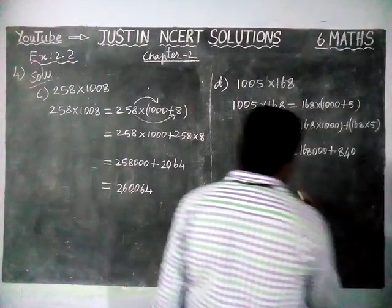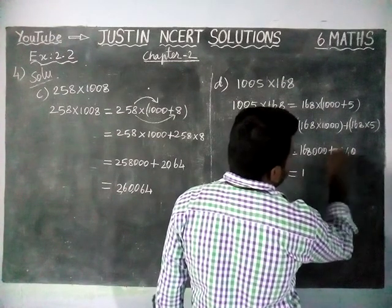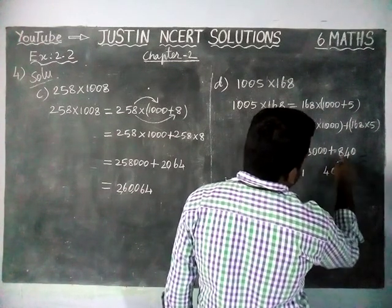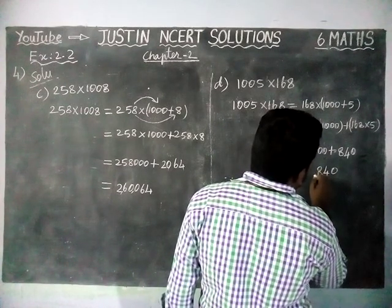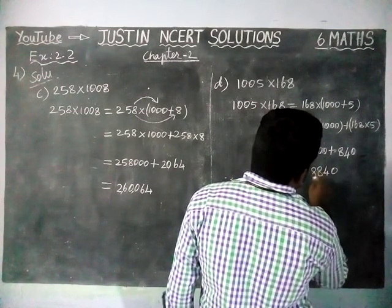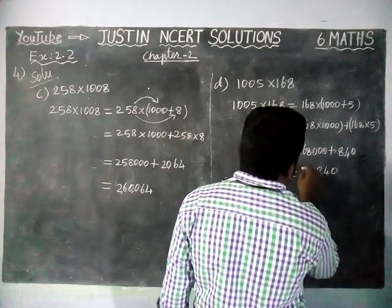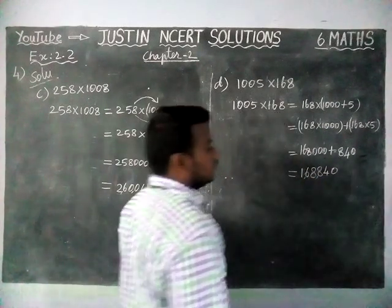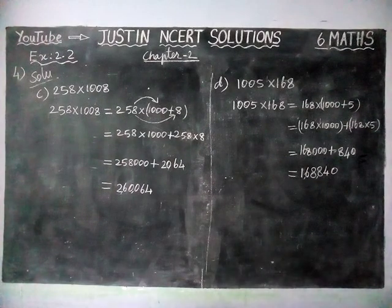So the answer: 1s place is 0, 10s place is 4, 100s place is 0, 1000s place is 8, 10,000s place is 0, then 6, and 1 lakhs place is 1. So the answer for Option D is 1,68,840. Thank you, students.